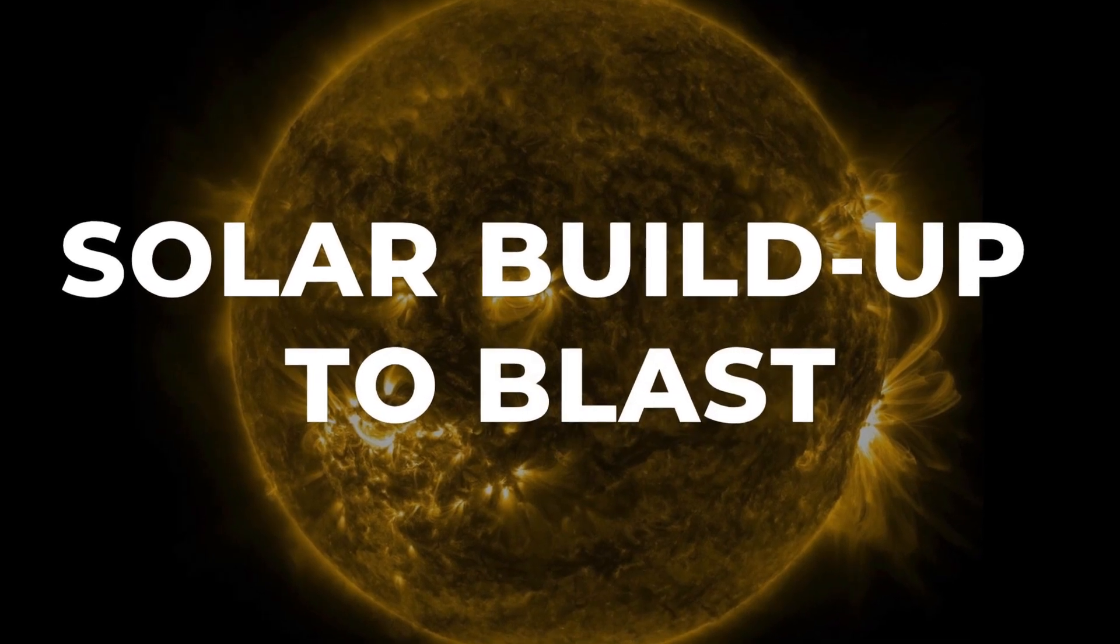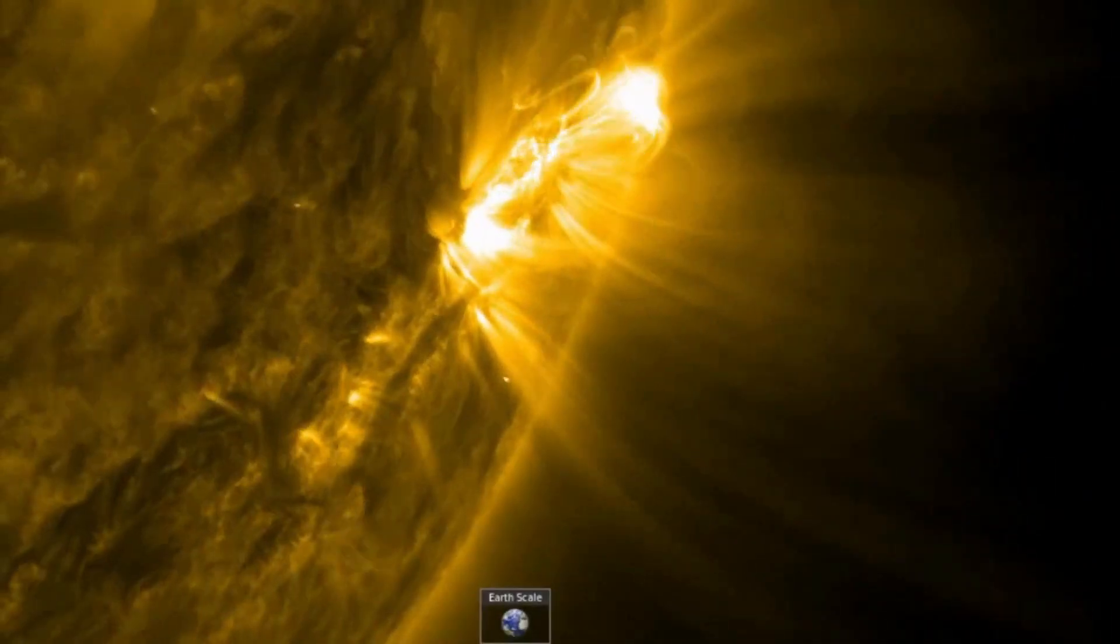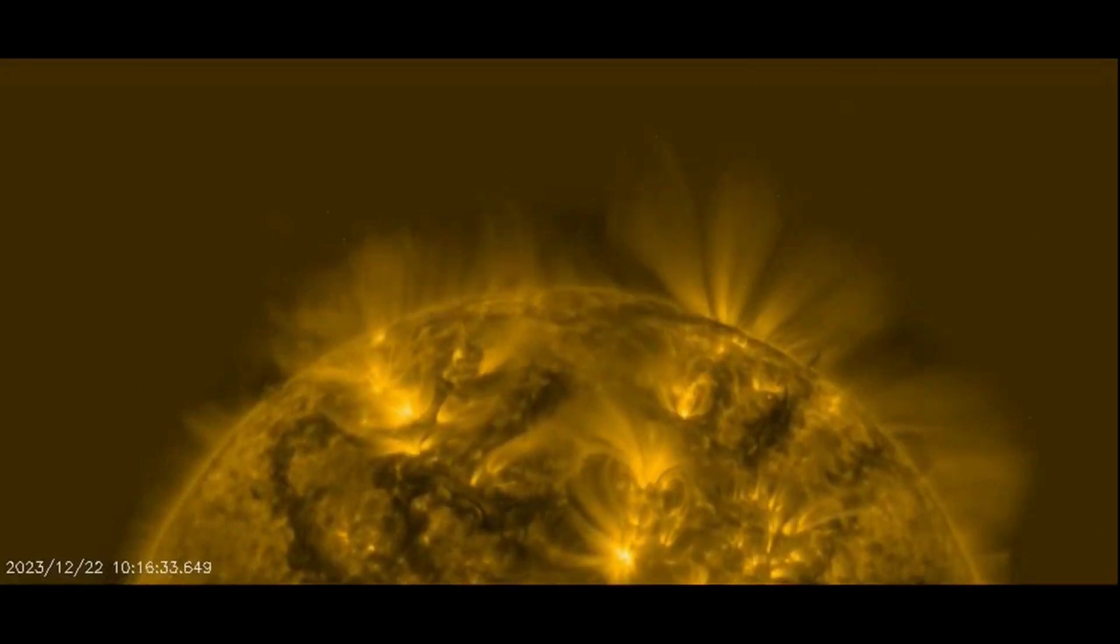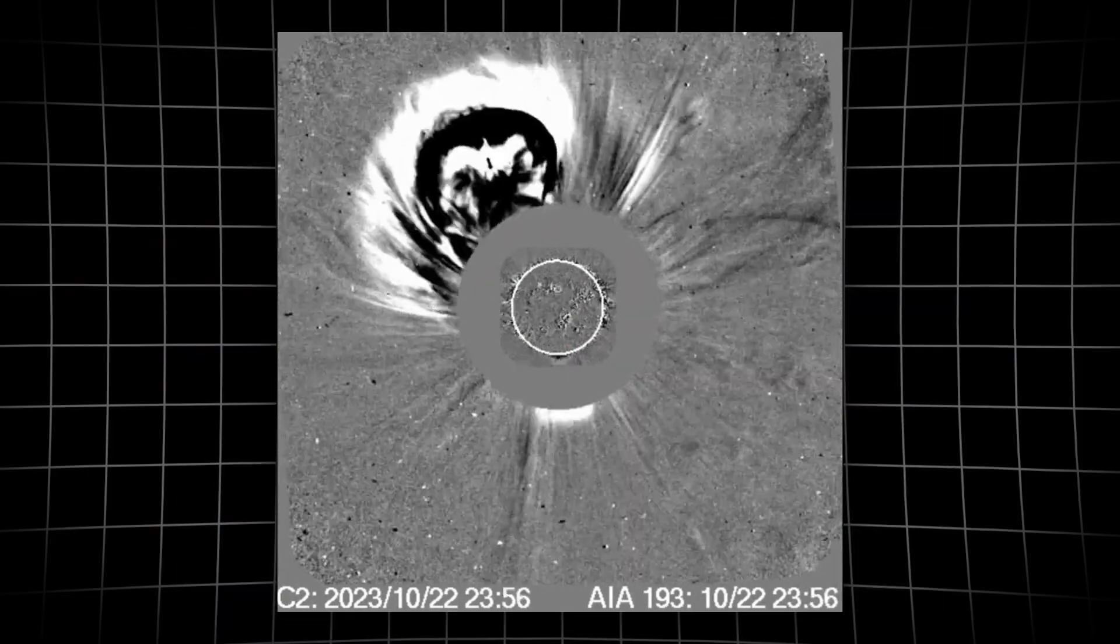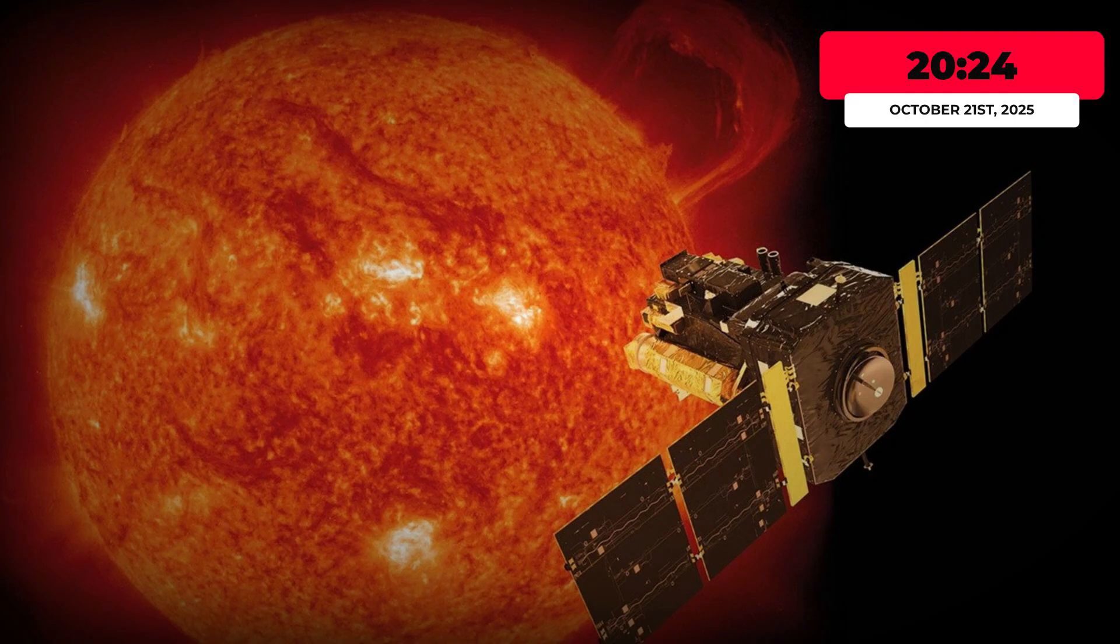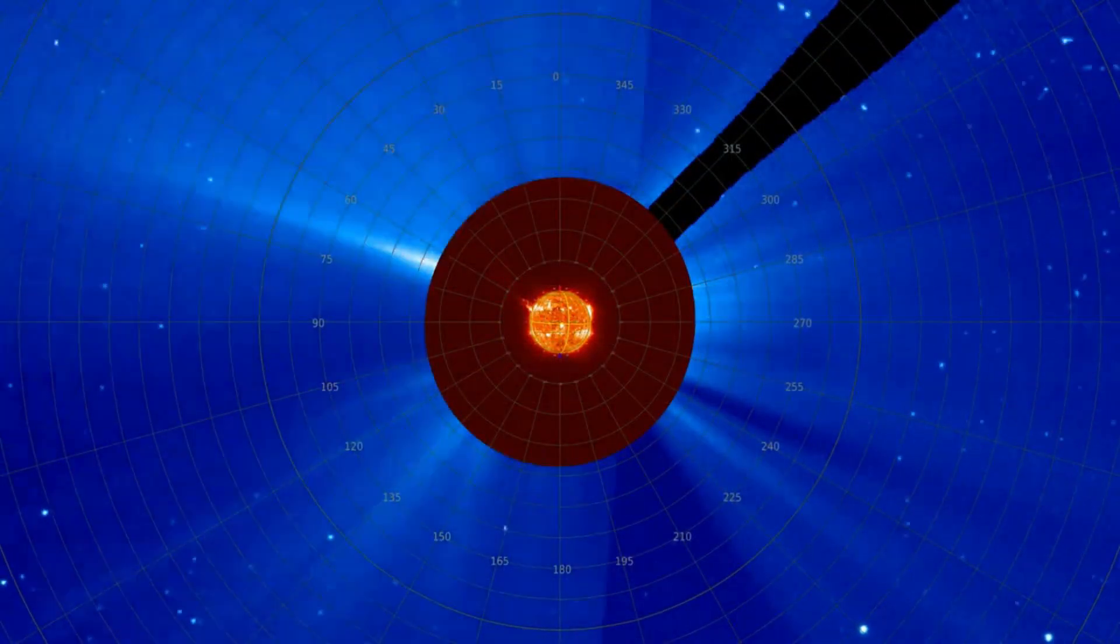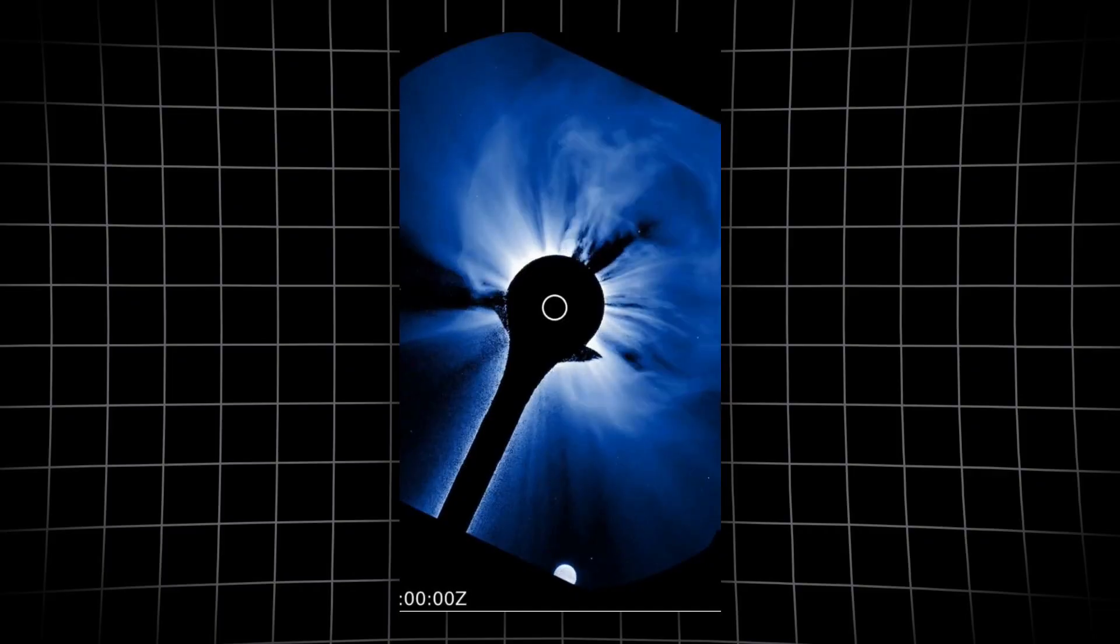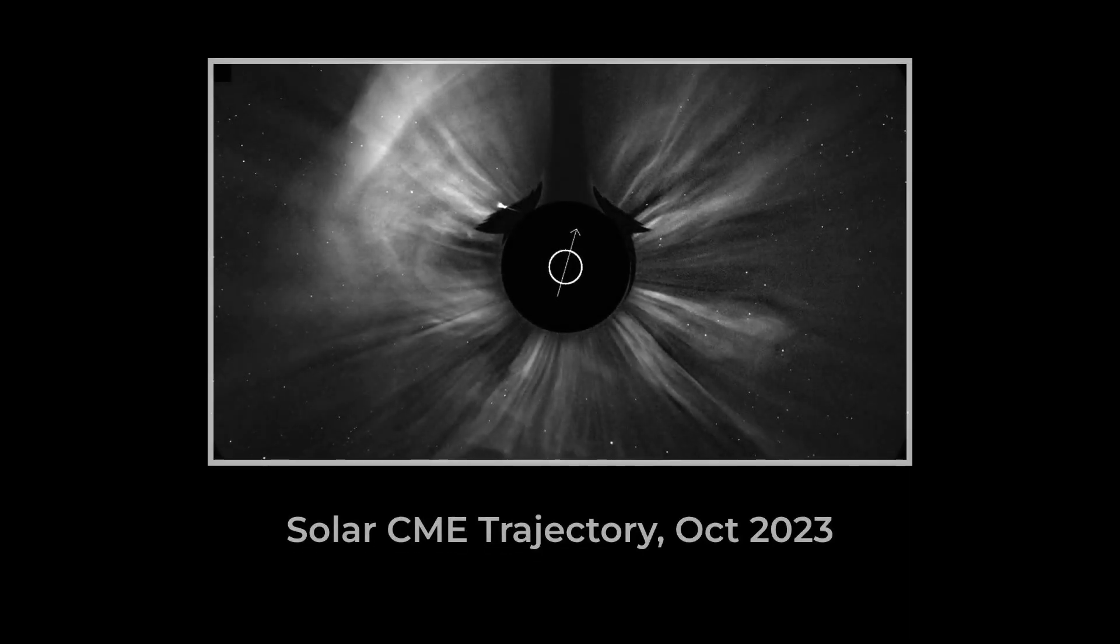Sunspot regions 4245 and 4246, both unusually active, dominated the solar disk in the days leading up to October 21st. Their magnetic fields churned with complex interlaced loops, prime territory for the kind of instability that precedes a major eruption. As these regions rotated over the Sun's eastern limb, observers noted a steady climb in X-ray flux. At 2024 Coordinated Universal Time on October 21st, the Solar and Heliospheric Observatory's LASCO-C2 coronagraph captured the first signs of upheaval. A bright, asymmetric halo began to bloom, spreading rapidly across the instrument's field. Unlike the classic uniform ring of a symmetric coronal mass ejection, this event pushed outward in a lopsided arc.